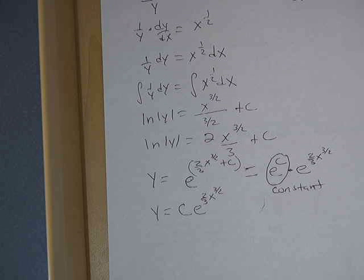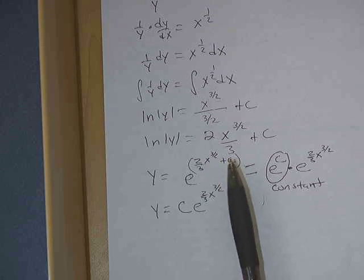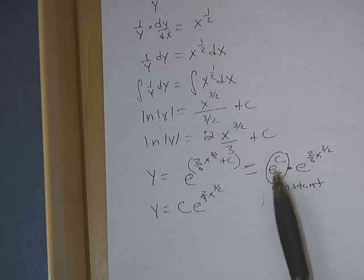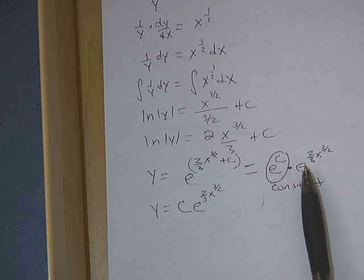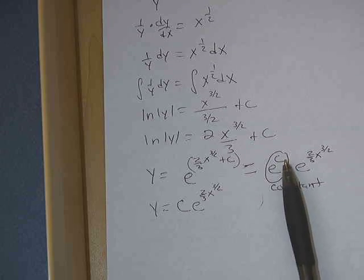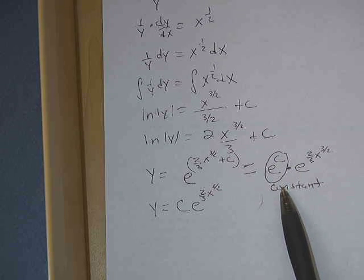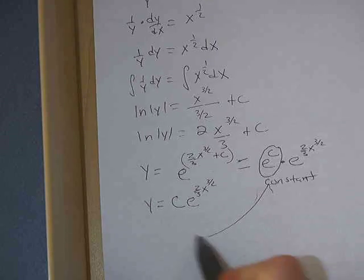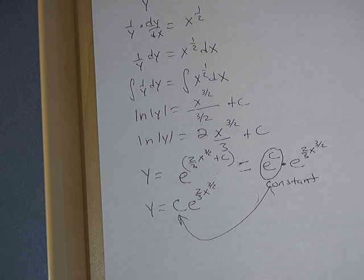Yes, just drop the absolute value. Yep. So again, the trick here is recognizing that when you have this kind of exponent, we can split it up this way. And e to the c, e to some constant, is still a constant, which is where that C comes from.